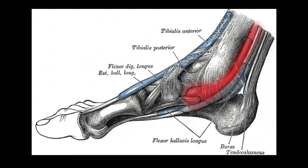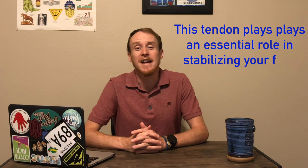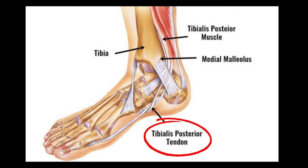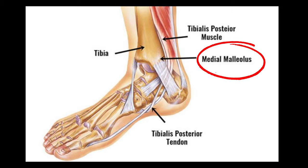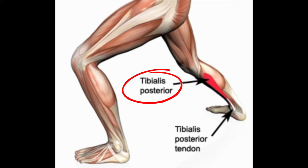The posterior tibial tendon is a little known but hugely important anatomical structure along the inside of your ankle. The tendon itself is not much thicker than a pencil, but it plays an essential role in stabilizing your foot. It inserts into your foot along your instep and runs up beside the medial malleolus. This large bump on the inside of your ankle attaches to the tibialis posterior muscle, which is buried deep inside your calves.